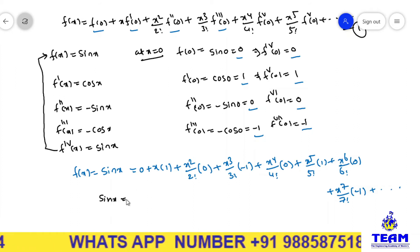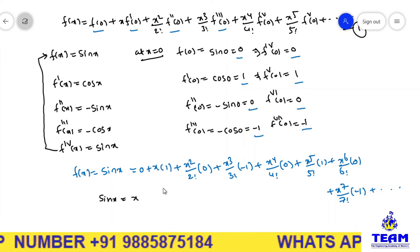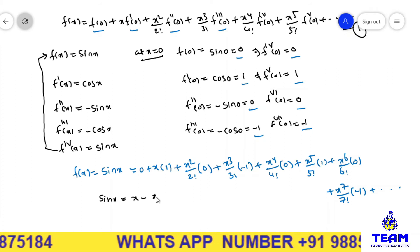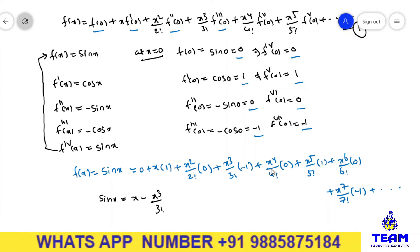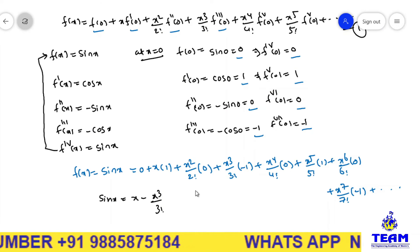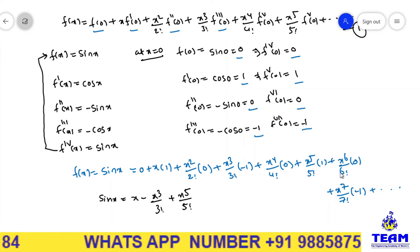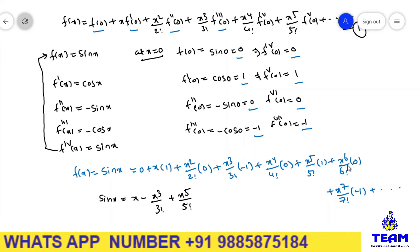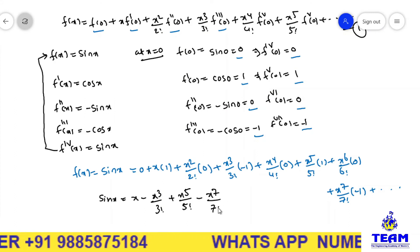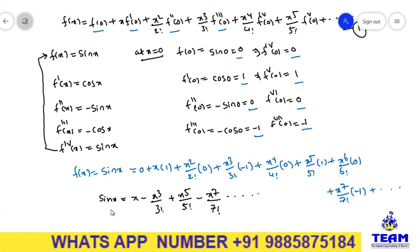Simplifying: sin(x) = x - x³/3! + x⁵/5! - x⁷/7! + ... Terms with zero coefficients drop out, giving us this final expansion of sin(x).